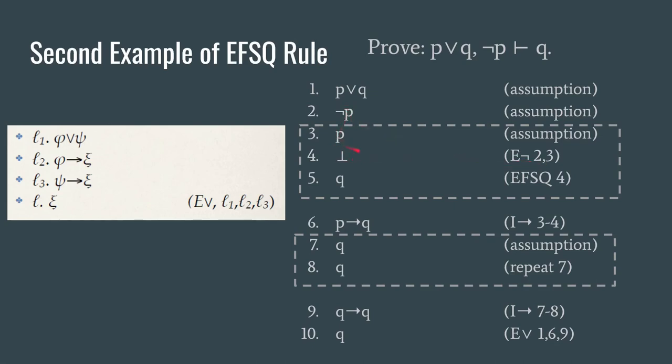Well since we have a falsum we can apply EFSQ to get Q. That shows that we have if P then Q. We draw our box around those assumptions and close those off. We'll never make use of them again. So we've got our P→Q arrow statement. Now we know we need to get Q→Q in order to apply the elimination of disjunction.